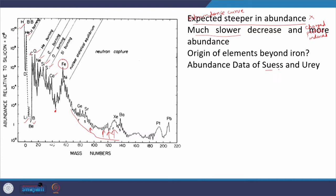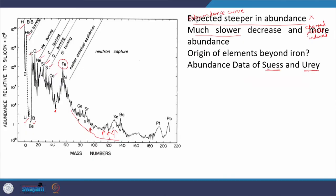These two observations — slower decrease and higher-than-expected abundance — go against the trend expected based on charged particle induced reactions. The question naturally comes to mind: what is the origin of elements beyond iron? That is where Suess and Urey made a breakthrough. The data they compiled is helping us understand the origin of elements beyond iron.